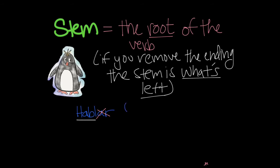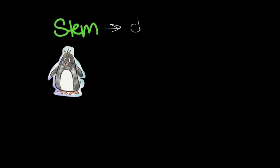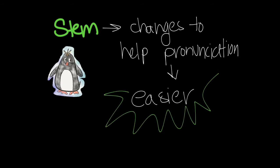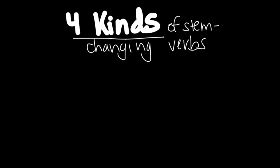It's kind of like a flower — your stem is the root or base of the flower supporting everything else. Verbs are kind of the same; the stem supports your conjugations. Why do we have these changes? We have them in order to help pronunciation and make it easier and smoother when we say our words in Spanish.